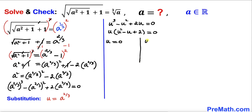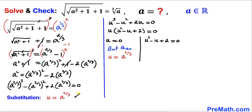Separating the factors, we get u equals zero, or u squared minus u plus two equals zero. For the first case, u equals zero, and since u equals a to the power 2/3, we have a to the power 2/3 equals zero, meaning a equals zero. This is one candidate solution.